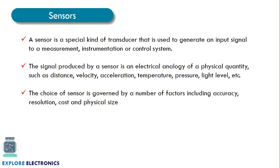A sensor is a special kind of transducer. Sensors and transducers always go hand in hand. A sensor is used to generate an input signal to a measurement, instrumentation, or control system — it is the starting device in such a system. The signal produced by a sensor is an electrical analogy of a physical quantity. For example, a temperature sensor converts the physical quantity temperature into an electrical quantity such as voltage or current. Other physical quantities we can measure include distance, velocity, acceleration, temperature, pressure, and light level.